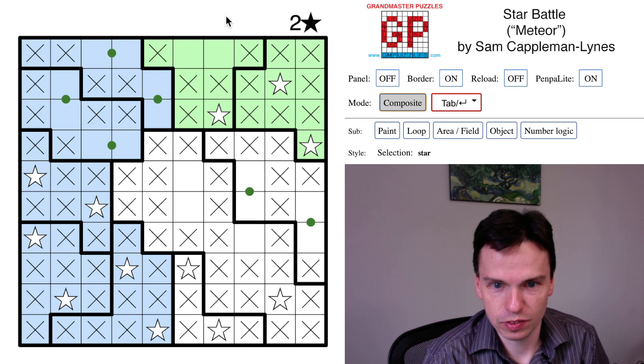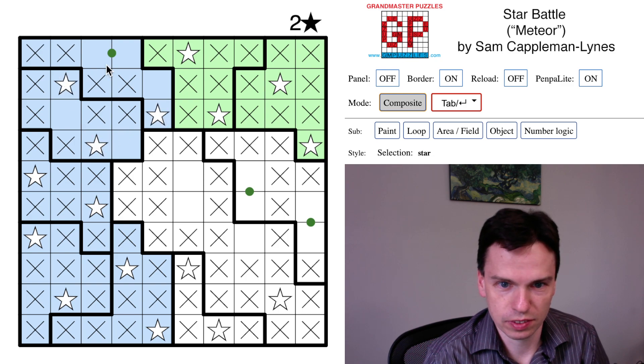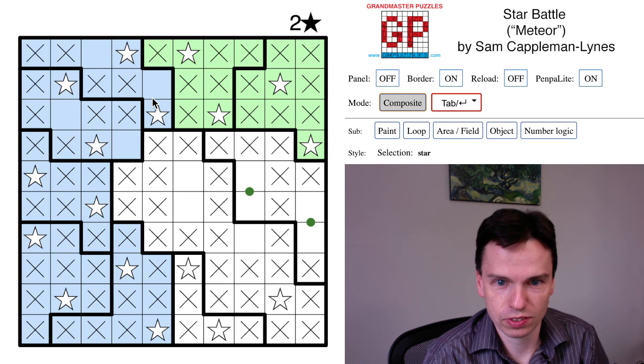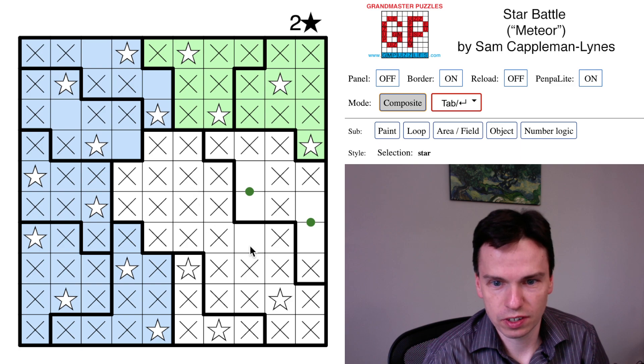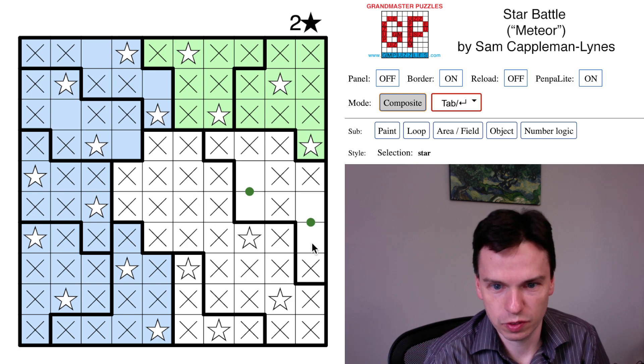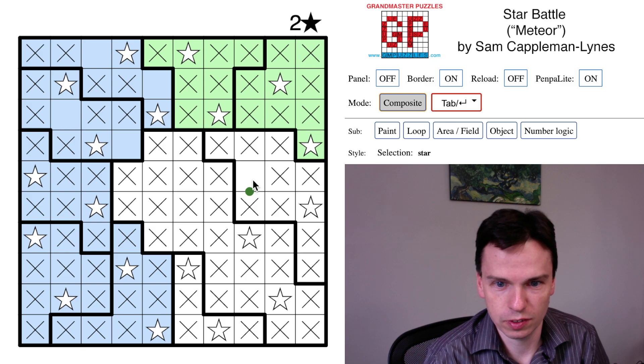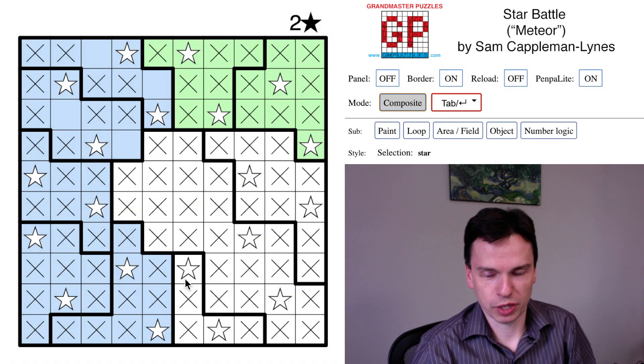That moves this cell over, which finishes this column, puts this cell in, which now finishes this orientation of an either or circuit that completes this column. So this region needs to have a star here, which will finish this row, finish this row, move everything up and we finish this puzzle.